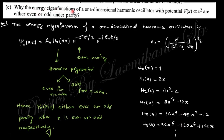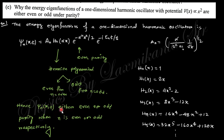Next question: why are the energy eigenfunctions of a one-dimensional harmonic oscillator with potential proportional to x² either even or odd under parity? The wave function involves Hermite polynomials, which can be even or odd depending on whether n is even or odd. So the eigenfunctions have even or odd parity depending on n.